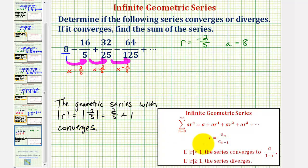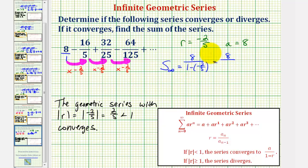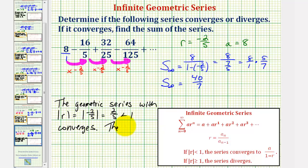We can find the infinite sum using A divided by (1 minus R): that's 8 divided by (1 minus negative 2/5), which is 8 divided by (1 plus 2/5), or 8 divided by 7/5. This equals 8 times 5/7, so our infinite sum is 40/7. The series converges to 40/7.